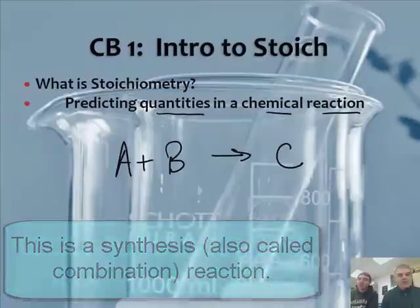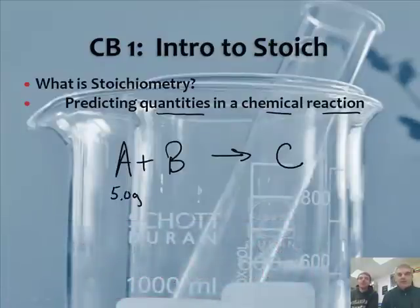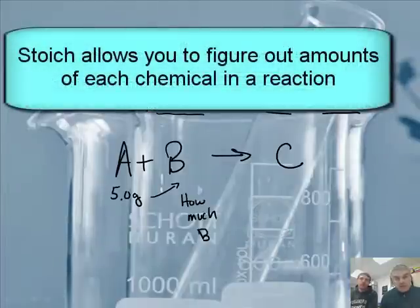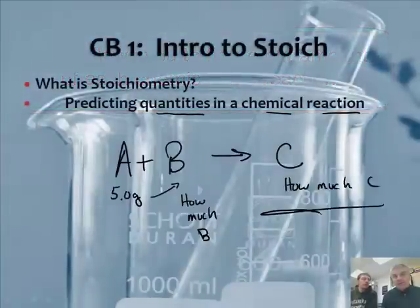Let's say you knew you had five grams of A. What would stoichiometry help you figure out? Well, it could tell us how many grams of B would react with that, and how many grams of C we could produce. And that could be in grams, or moles, or if it's a gas, liters.